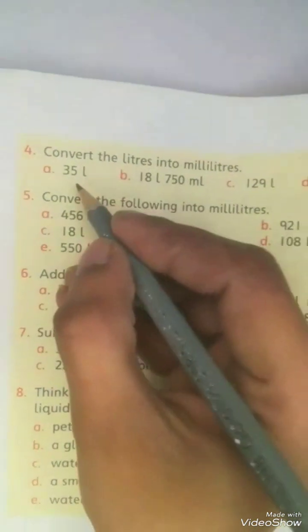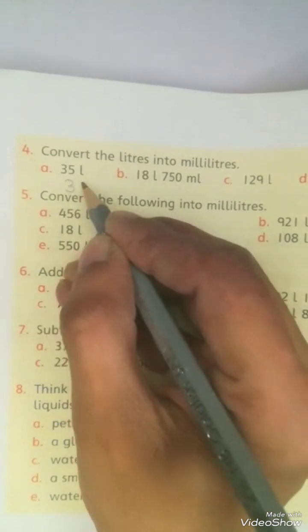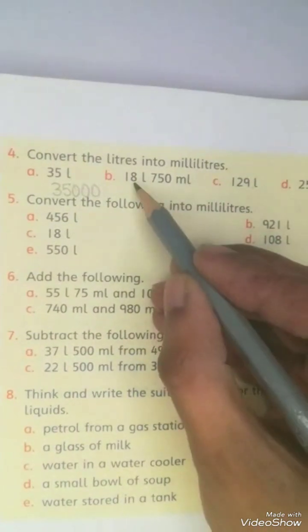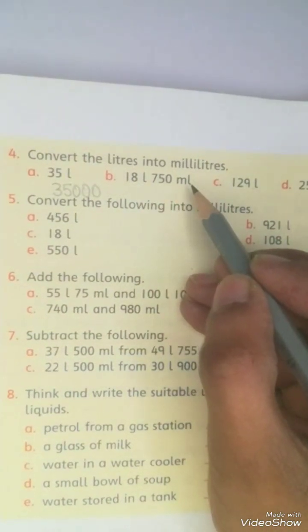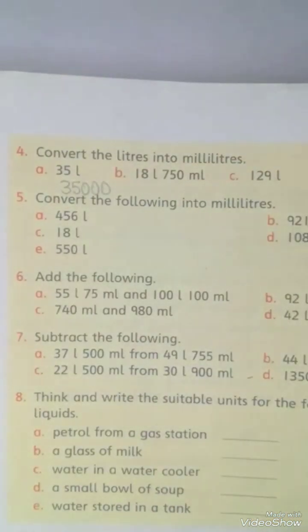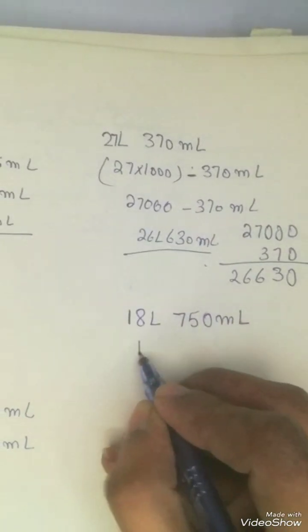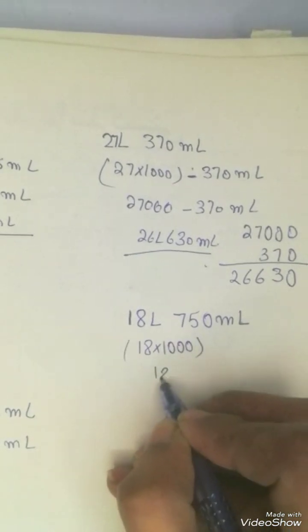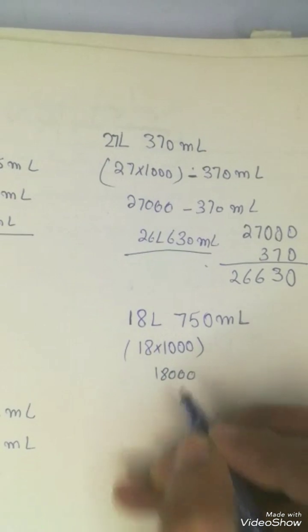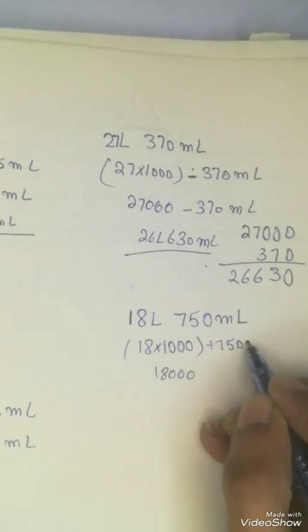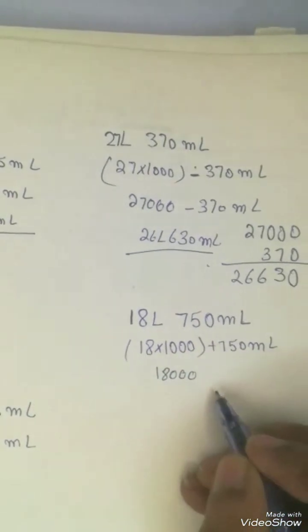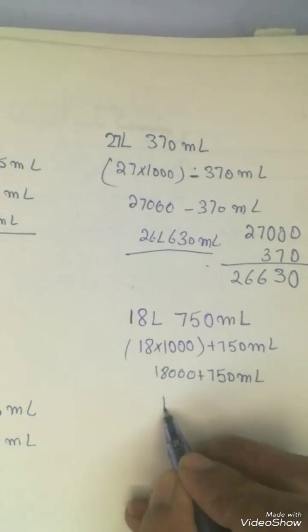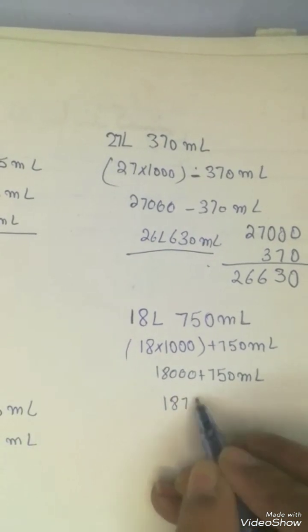35 liters multiplied by 1000 gives 35,000 milliliters. Now question B: 18 liters 750 milliliters. We solve it — 18 multiplied by 1000 is 18,000, plus 750 milliliters.